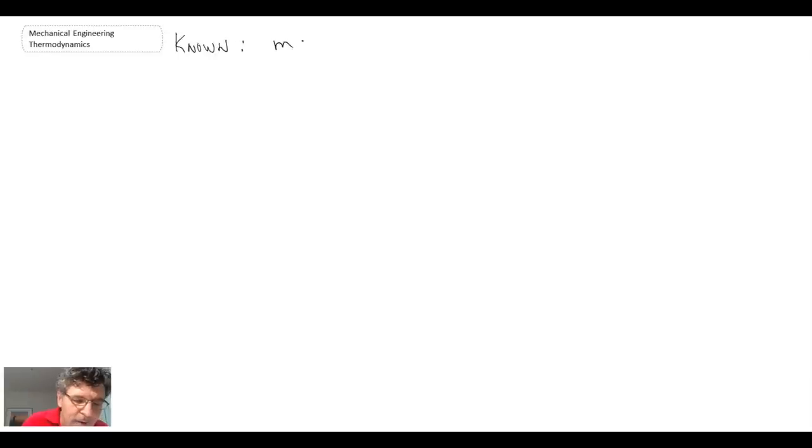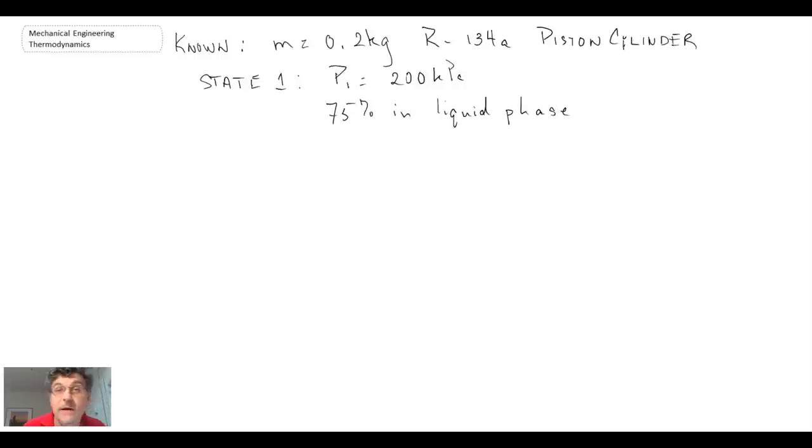We know that we have a mass of 0.2 kilograms in a piston cylinder device with R134A inside. At state 1, we have a pressure of 200 kilopascals and 75% is in the liquid phase. From that we can determine the quality. Recalling the definition of quality, the mass of vapor to mass total, if 75% is in the liquid phase, 25% is in the vapor phase. So the initial quality for this problem is 0.25.